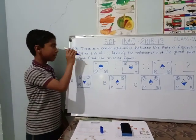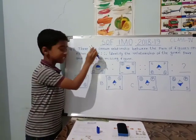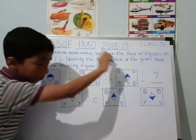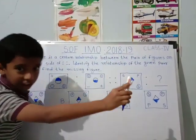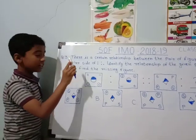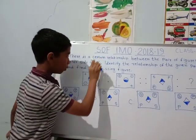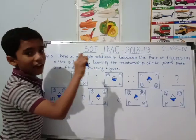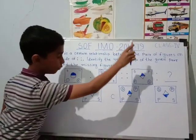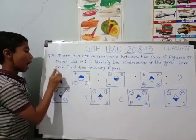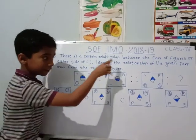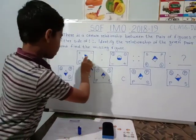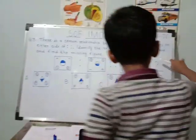Question number 3. There is a certain relationship between the pair of figures on either side of two dots and three dots. We need to identify the relationship of the given pairs and find the missing figure.